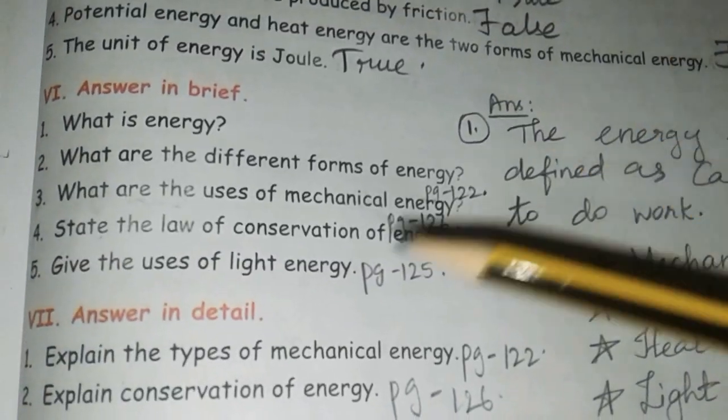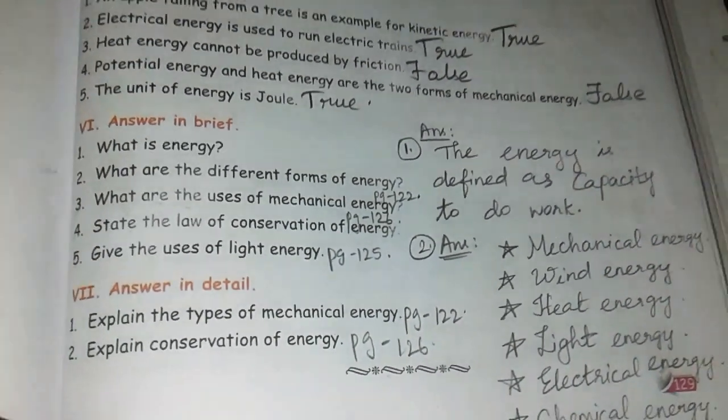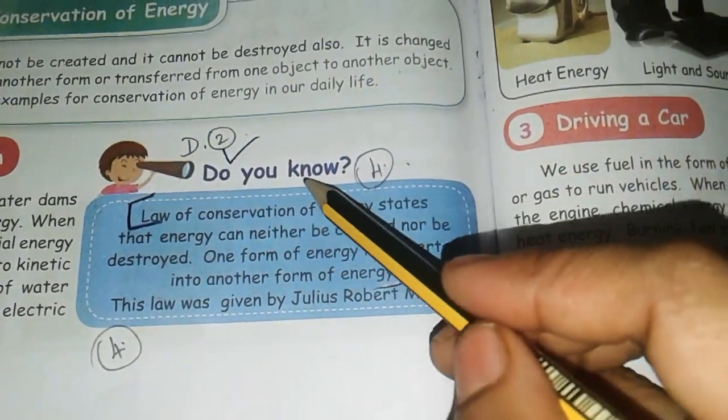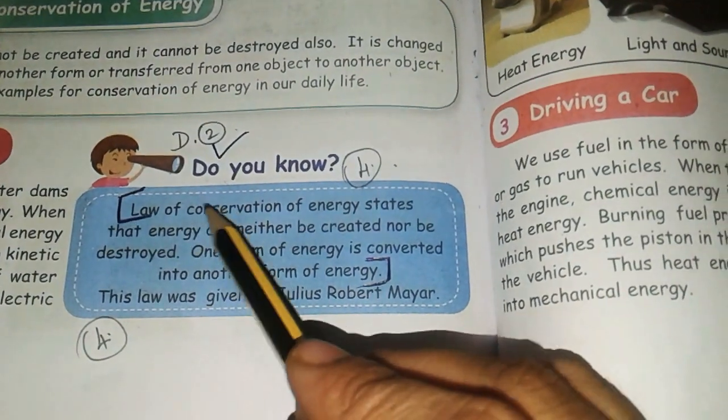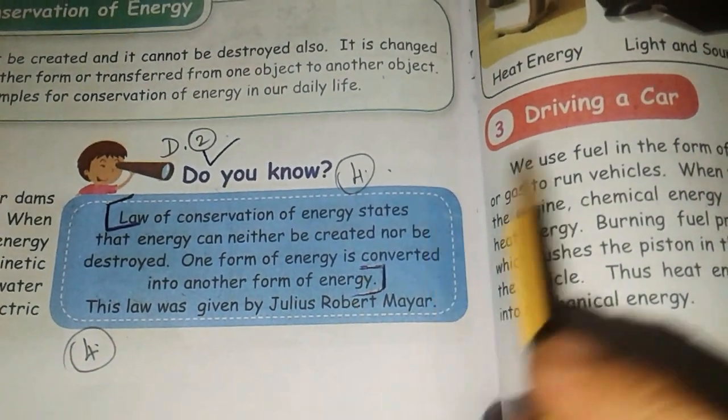Fourth one: state the law of conservation of energy. Page number 126. In the blue color there's a paragraph - that is the answer. Law of conservation of energy states that energy cannot be created and it cannot be destroyed. It is changed from one form to another form or transferred from one object to another object.